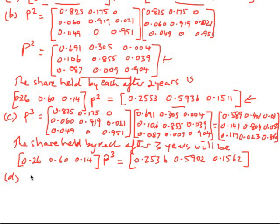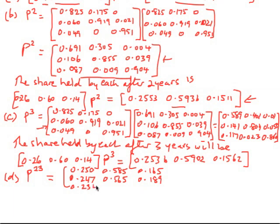For after 23 years, we need P^23. This is where you'll definitely need a calculator, because you have to raise this matrix to the power of 23. When you do that, you'll get 0.250, 0.585, 0.165, 0.247, 0.565, 0.189, 0.234, 0.384, 0.382. That's P^23.